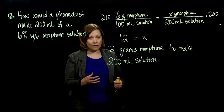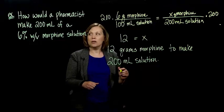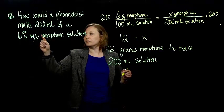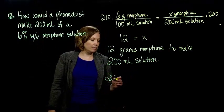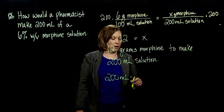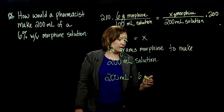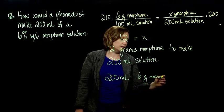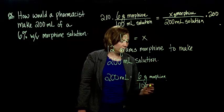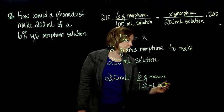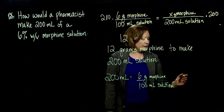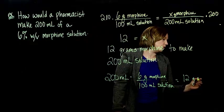You could have also solved this with an equation, both ways work. We know 200 milliliters, we have a 6% weight per volume. So we need 200 milliliters times—6% weight per volume would mean 6 grams of morphine per 100 milliliters of solution. There we go. We have our equation. And you would end up with 12 grams of morphine.